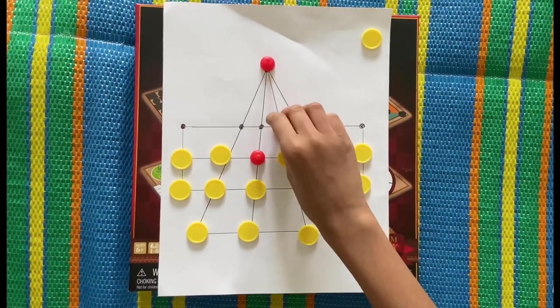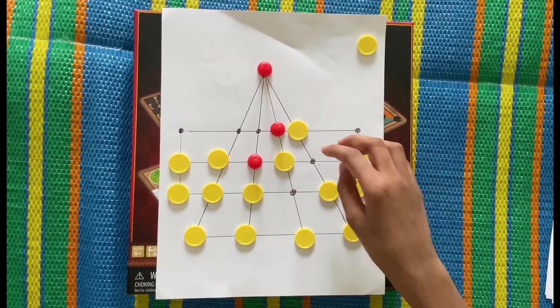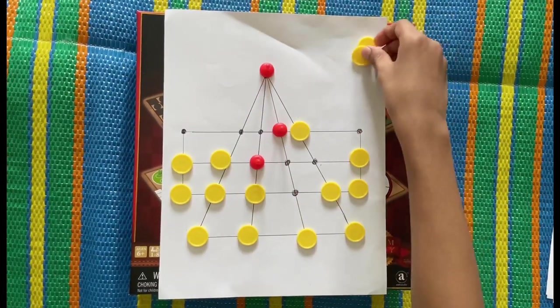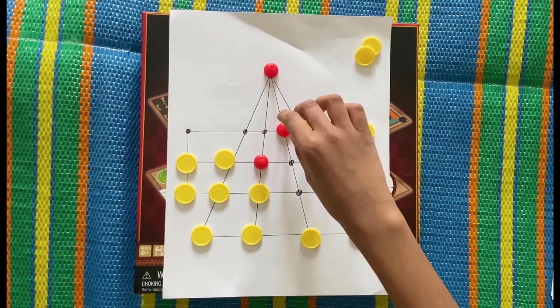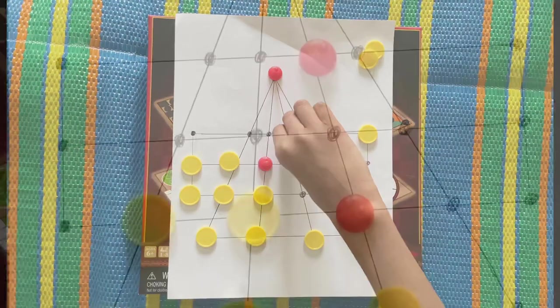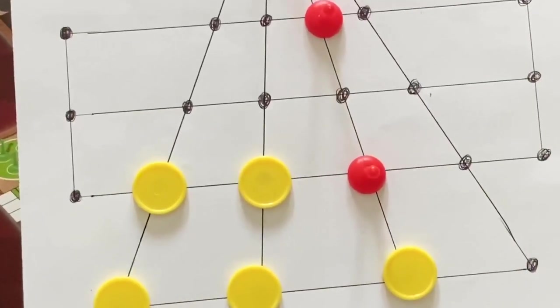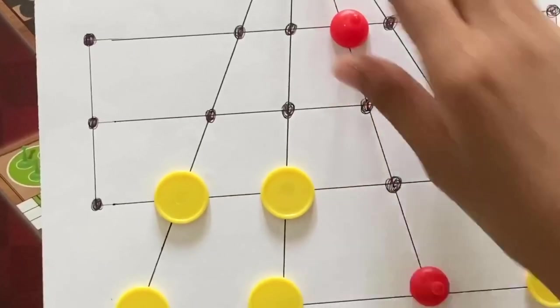And remember, the sheep cannot jump in and attack or eat a tiger. That would be ridiculous. For example, if the tigers and sheep are like this...